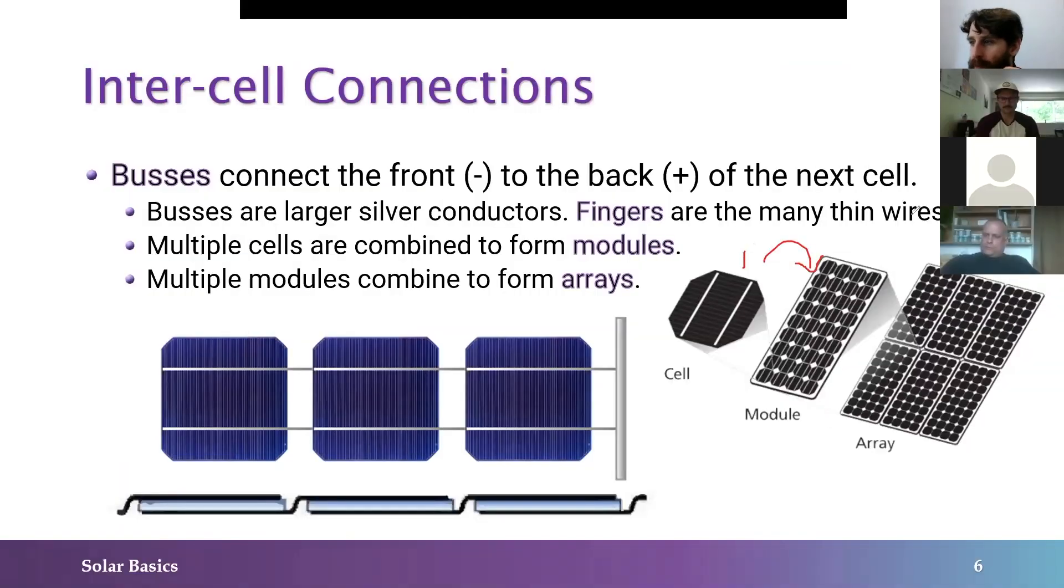If I put multiple modules together in series, so I take the positives and negatives of each and string them along to make a string of modules, that's what we call a whole bunch of modules paired together in series, it's a string. And then if I take multiple strings or multiple panels, I just take a whole bunch of modules, that's when we get to the array level. Basically, your whole system is your array.